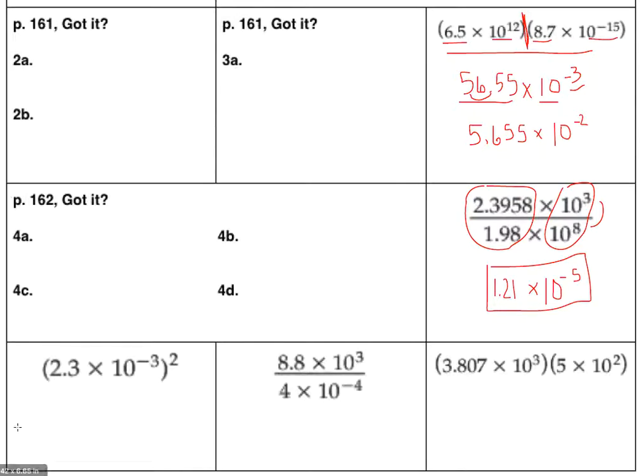Jumping down to 2.3 times 10 to the negative 3 squared. That just means I'm going to take 2.3 times 10 to the negative 3 times 2.3 times 10 to the negative 3. I'm going to take it times itself.